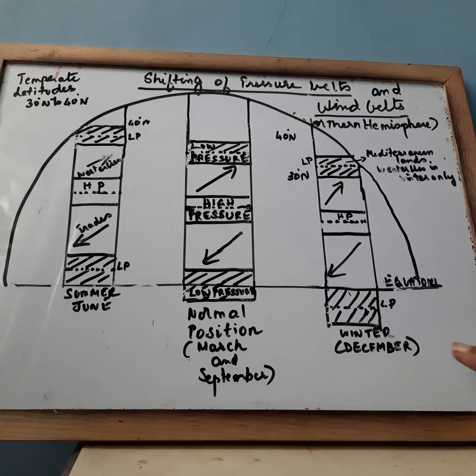So here in this column you find in winter it is shifted southwards 5 to 10 degree, the position is shifted southwards.